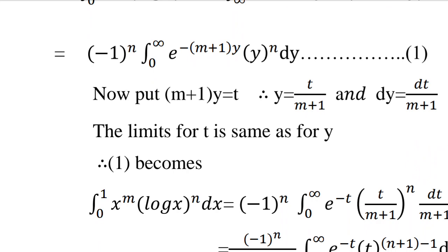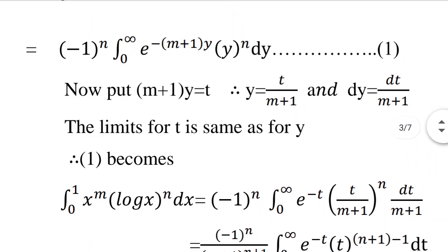Continuing, this equals minus 1 the whole raised to n times integral from 0 to infinity of e raised to minus t times t by m plus 1 the whole raised to n times dt by m plus 1, after substituting t equal to m plus 1 times y. This gives minus 1 the whole raised to n by m plus 1 the whole raised to n plus 1 times integral from 0 to infinity of e raised to minus t times t raised to n dt.